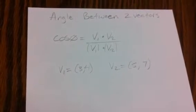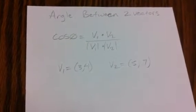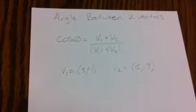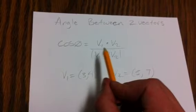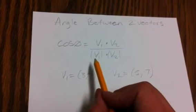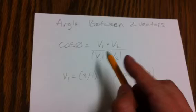Okay guys, so now we're going to figure out how to find the angle between two vectors. This is probably going to use some concepts that you may have forgotten. Cosine theta equals vector 1 times vector 2 over the magnitude of vector 1 times the magnitude of vector 2.